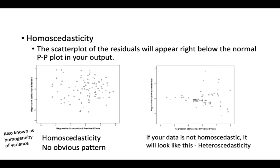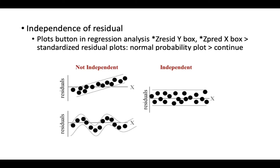As for homoscedasticity, you can see the scatter plot that comes after your normal PP plot. You can see that the assumption for homoscedasticity is met when the data is evenly spread. If the data seems to be grouped into a corner, then we assume the data is not homoscedastic — this can be called heteroscedasticity. For independence of residuals, you can look at the standardized residual plot. This is assumed to be normal when the residuals are distributed evenly.